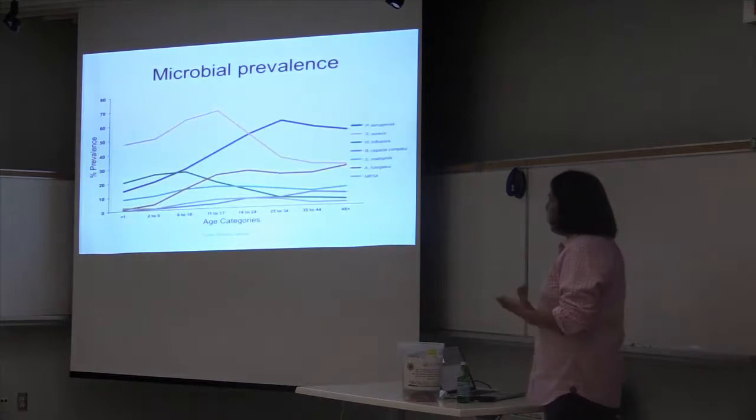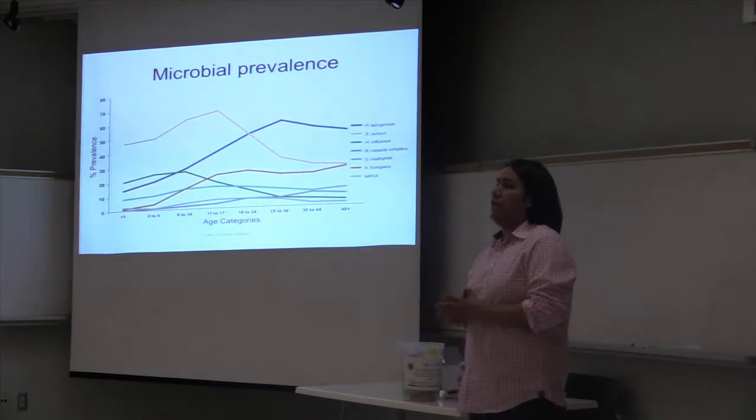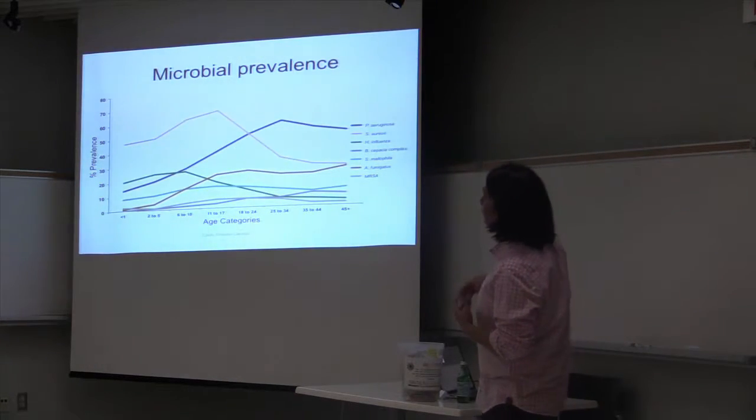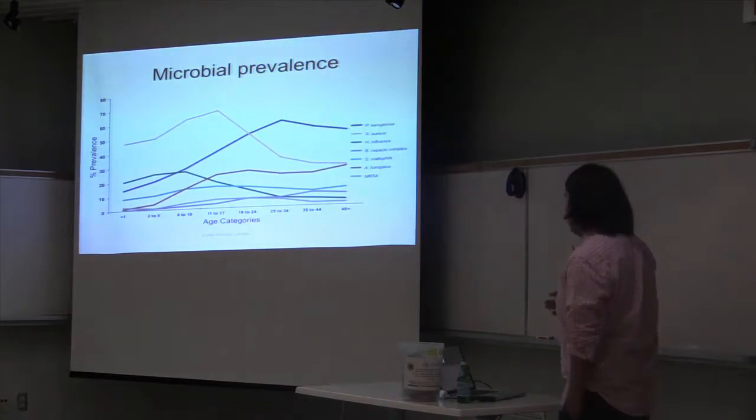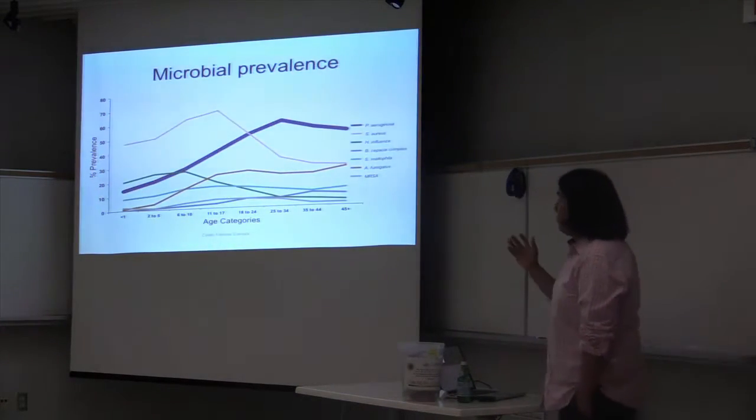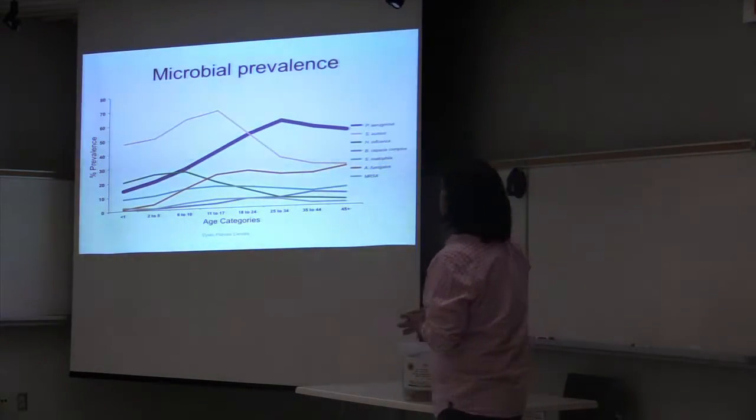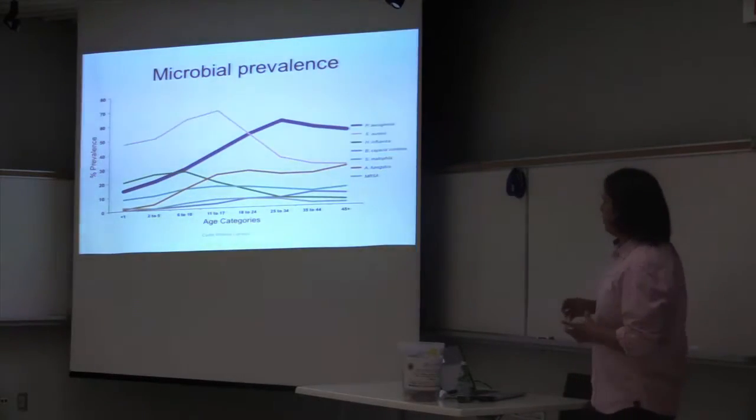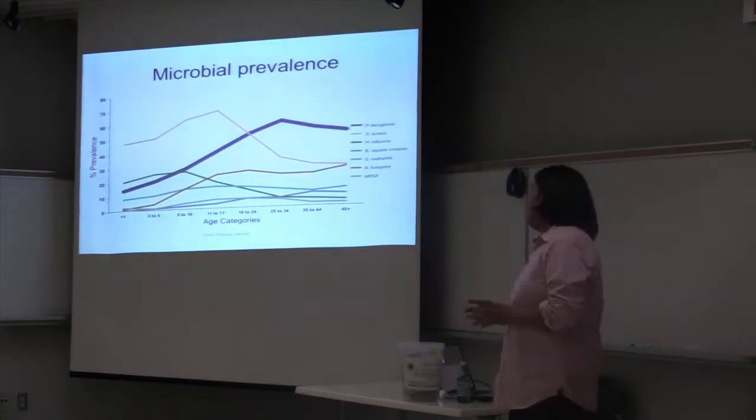There is a growing awareness that the polymicrobial makeup of the cystic fibrosis lung is dynamic and complex. As we can see here, the relative prevalence of bacteria and fungi across disease progression changes quite dramatically. For instance, Pseudomonas aeruginosa is not very prevalent amongst pediatric patients, but amongst adult patients, it becomes the most prevalent bacteria. Nonetheless, the cystic fibrosis microbiome is still poorly understood.